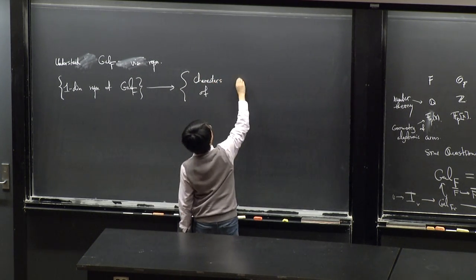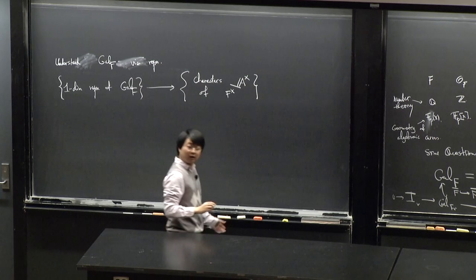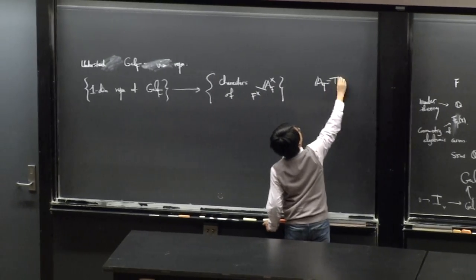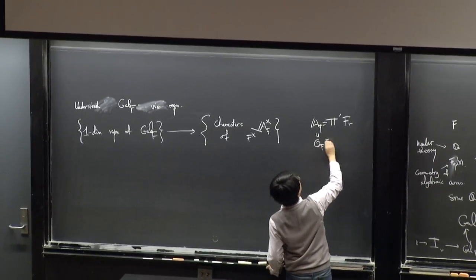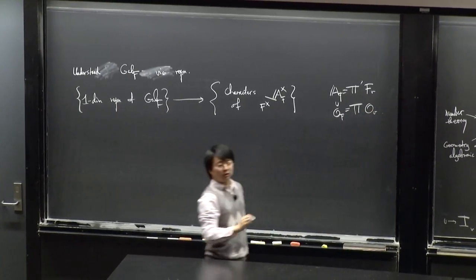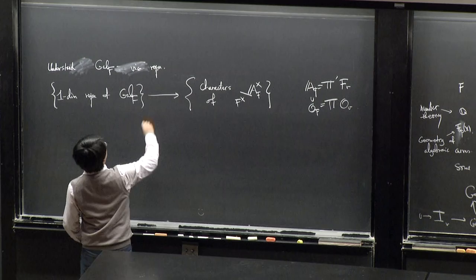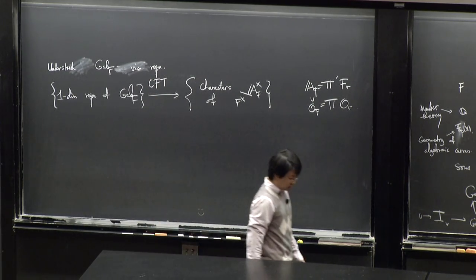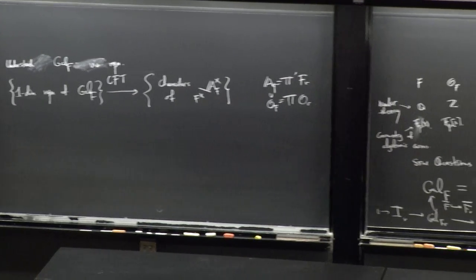For the one-dimensional case, class field theory relates representations to characters of the abelianization A_F^× / F^×, where A_F is the ring of adèles — the restricted product of all completions F_v — containing the ring of integral adèles as a product of local integers. This theory started from the end of the 19th century and was more or less complete by the middle of the 20th century.